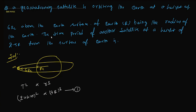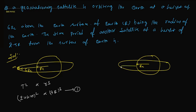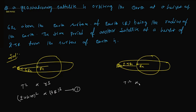For part B, they ask for the time period of another satellite at a height of 2.5 Re from the surface. Drawing a new diagram: Earth radius Re, and the satellite orbits at 2.5 Re above, so total radius = Re + 2.5Re = 3.5 Re. Applying the same law: T'² ∝ (3.5 Re)³. This is equation number 2.